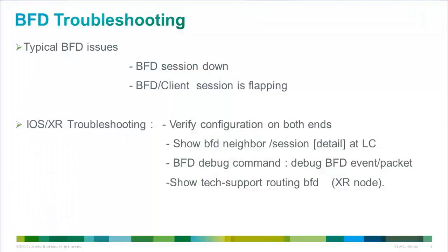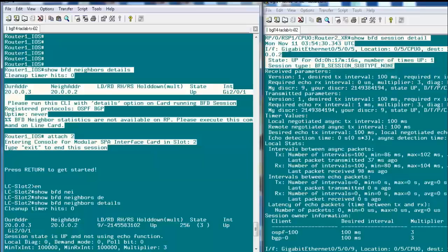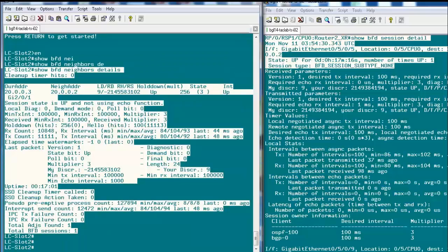Common problems with BFD in production networks are BFD session not coming up and BFD session flapping. The first step before troubleshooting is to verify IP connectivity between the two BFD peering nodes, then verify configuration on both ends and ensure BFD packets are not being filtered. For BFD flapping issues, make sure telco links are clean and BFD timer values are safely higher than the maximum latency on the transmission link. 'Show bfd neighbor detail' on IOS and 'show bfd session detail' on XR help verify BFD packet statistics at RP and LC levels, and also registered client information.